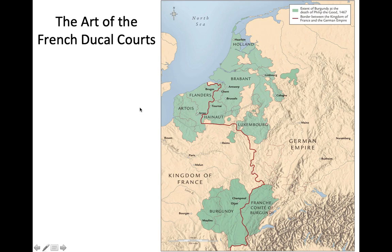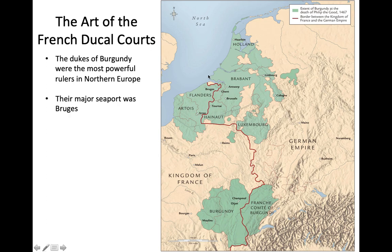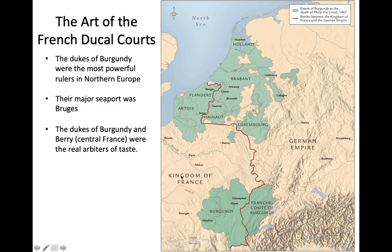Looking at this map, the Dukes of Burgundy are a really important group — the most powerful rulers in Northern Europe. Their major seaport was Bruges, and the Dukes of Burgundy and Berry in central France were the real arbiters of taste. Where once it might have been the King of France, now it's actually the Dukes in charge of what is popular in art. The French King held court in Paris, but the Dukes held more splendid courts in their own cities. Bruges was the commercial center of Northern Europe, rivaling the Italian city-states of Florence, Milan, and Venice as an economic hub, and they're getting really wealthy.